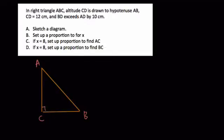And the altitude is just a line that's drawn to hit the opposite side at a right angle. So that's our altitude, and that's CD. So what are we told? We're told that CD equals 12, so our altitude is equal to 12. And we're told that BD exceeds AD by 10. So we label this as 12. And BD exceeds AD by 10. So if AD is X, BD is X plus 10.